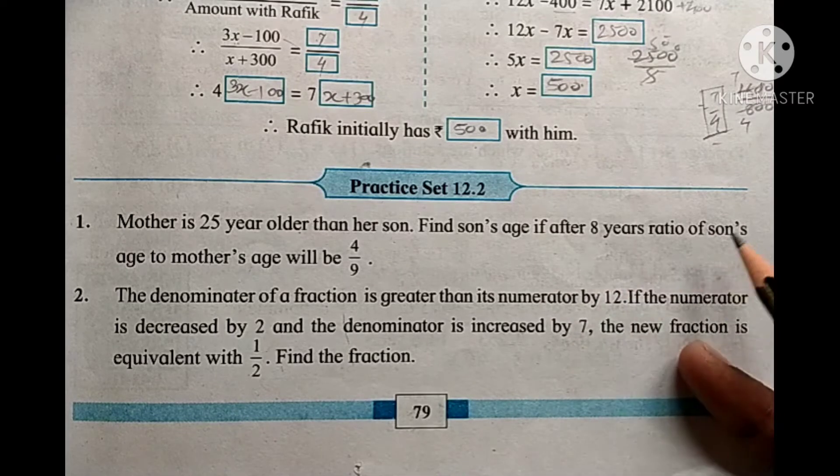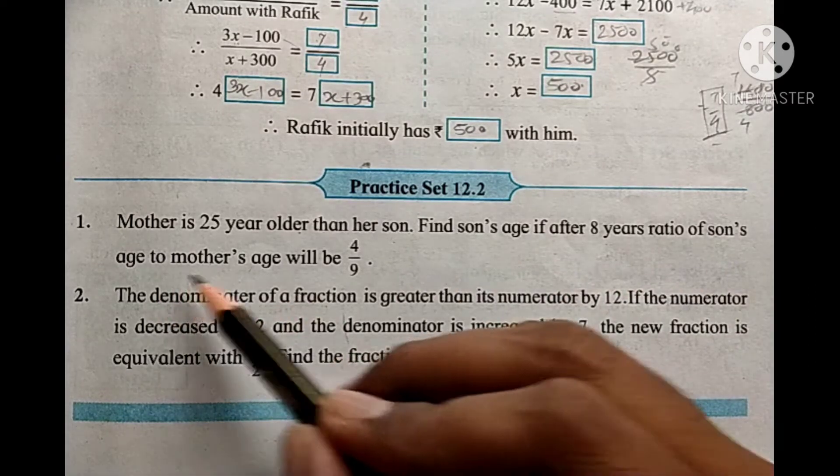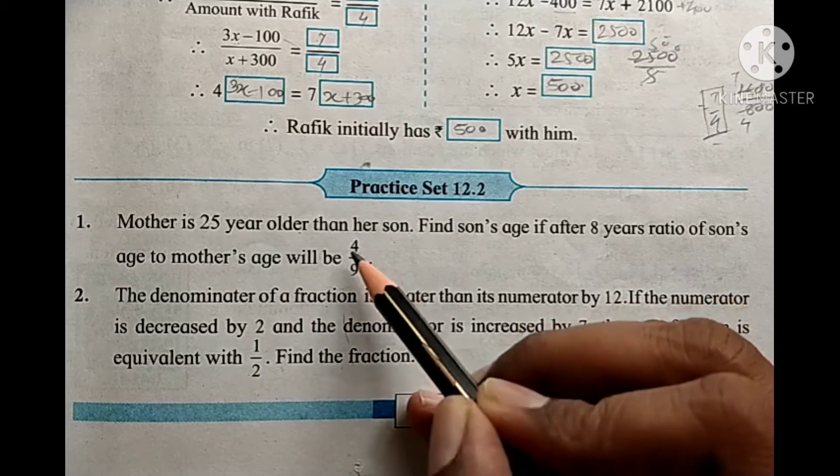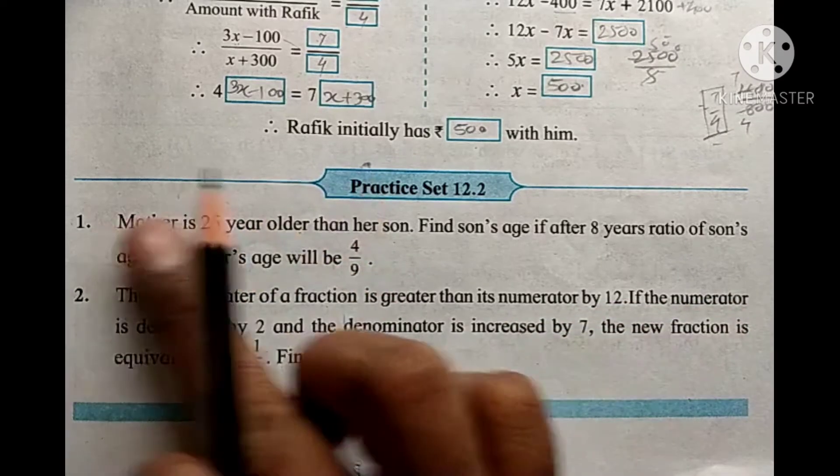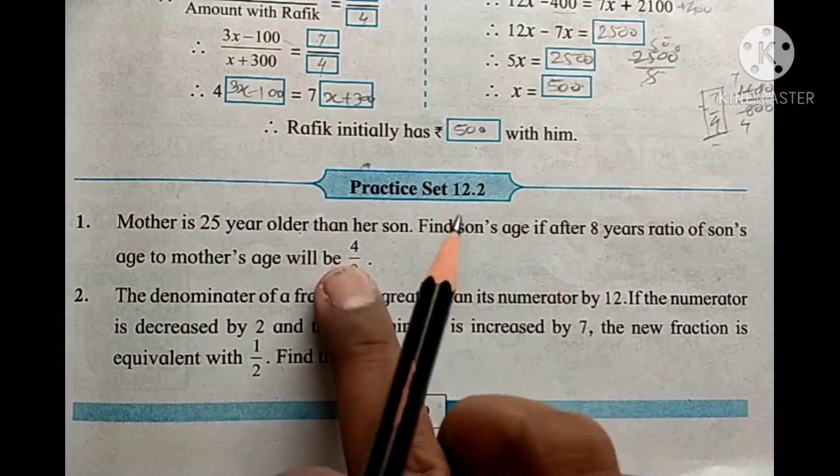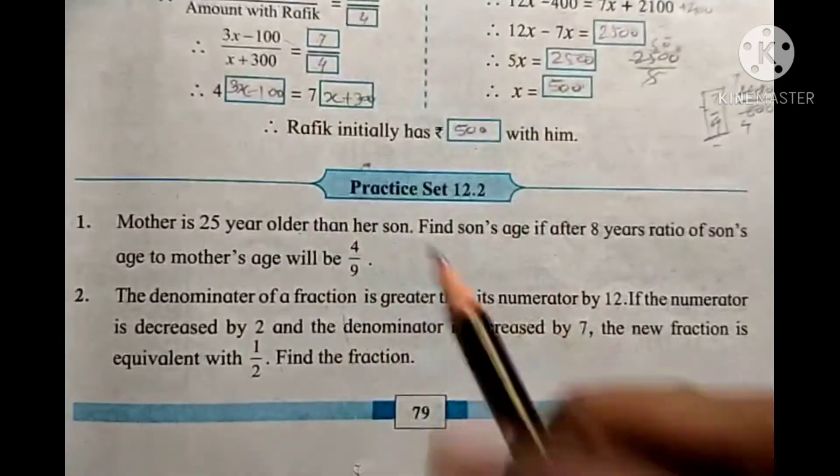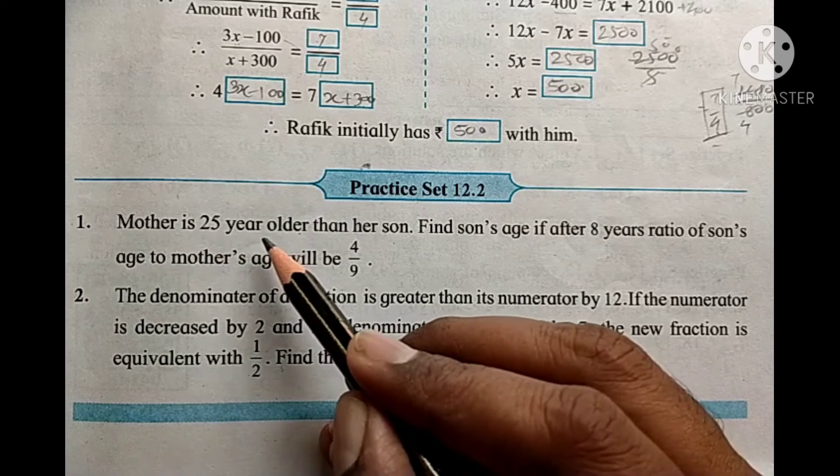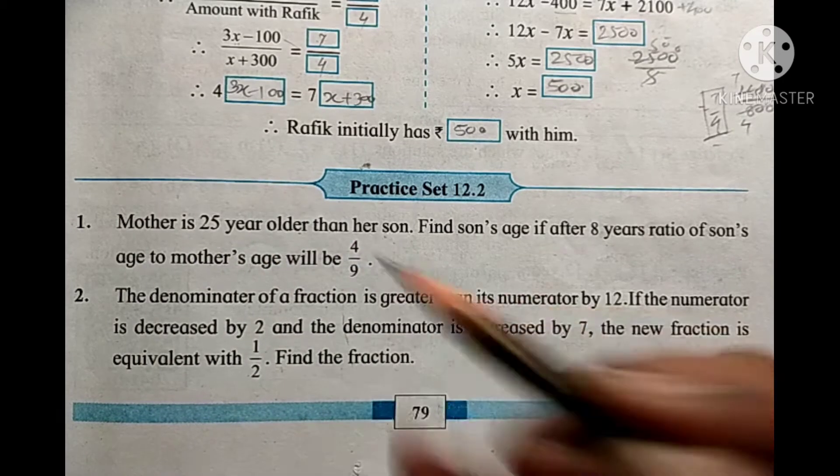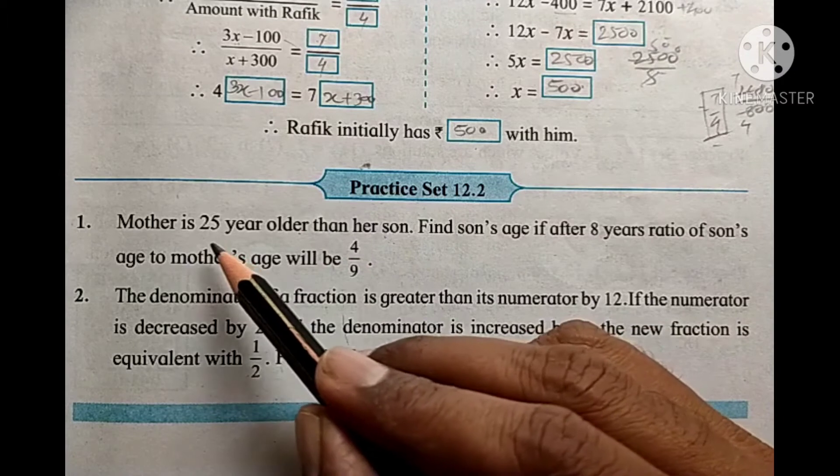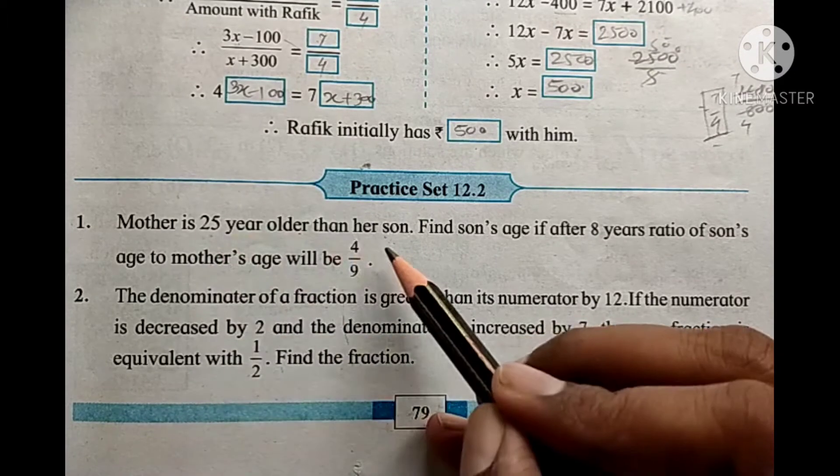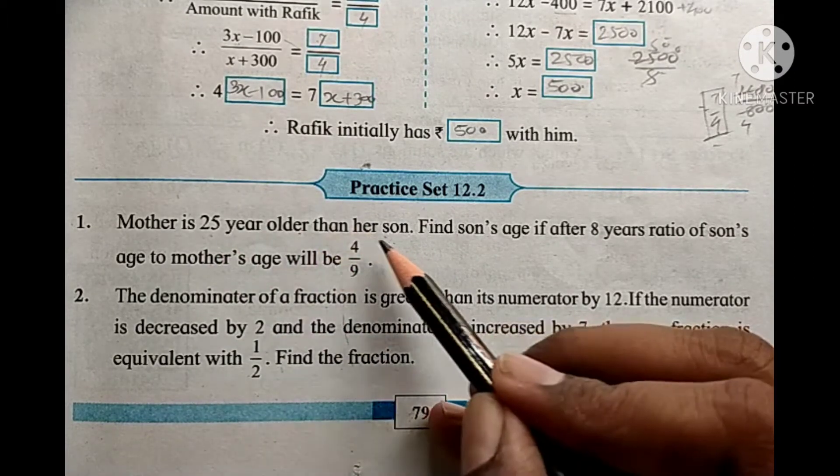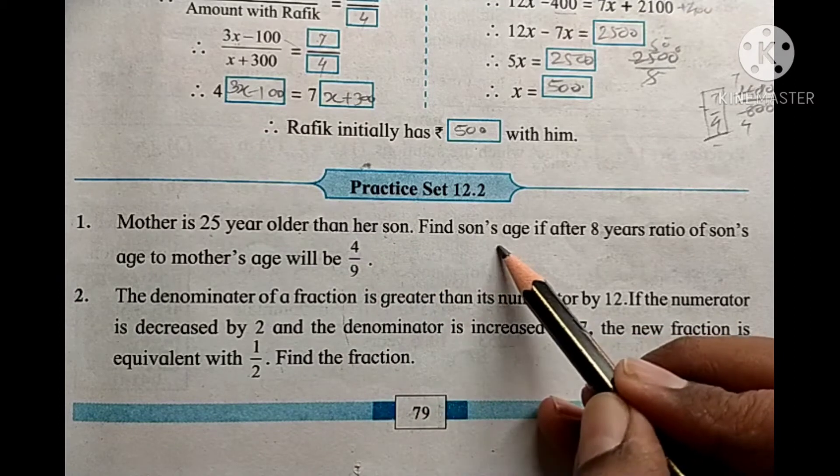Next problem: The mother's age is 25 years older than the son's age. The ratio of the son's age to the mother's age will be 4 upon 9. Find the son's age.